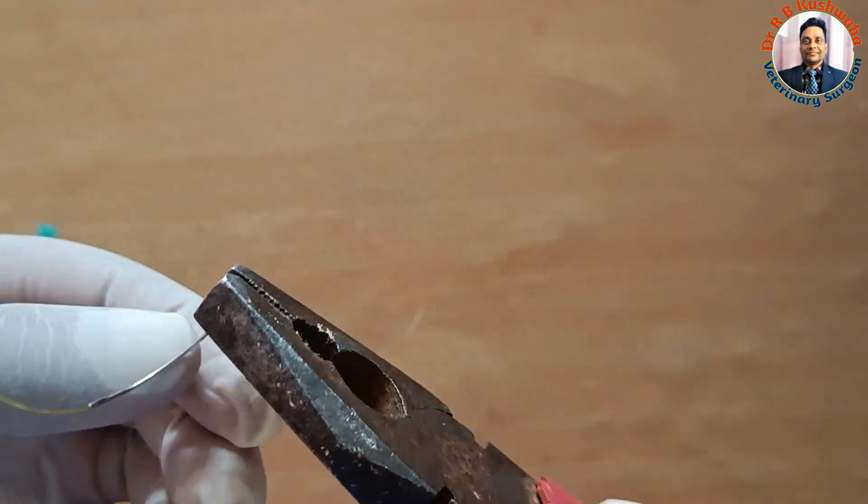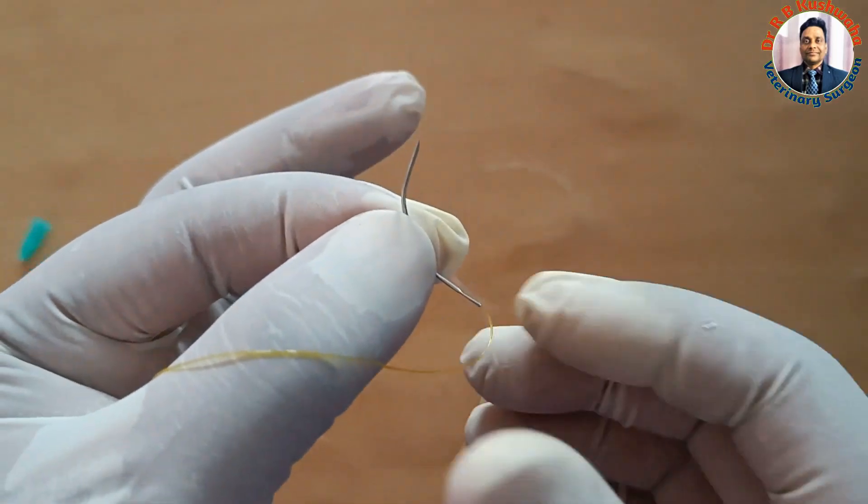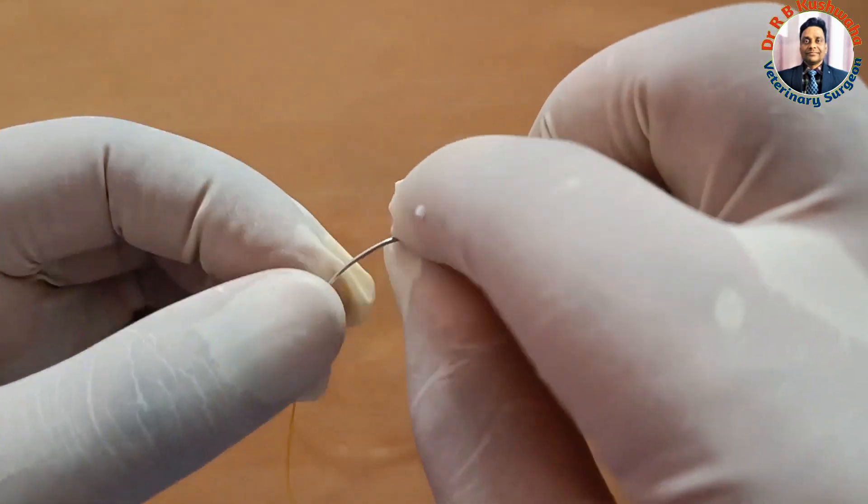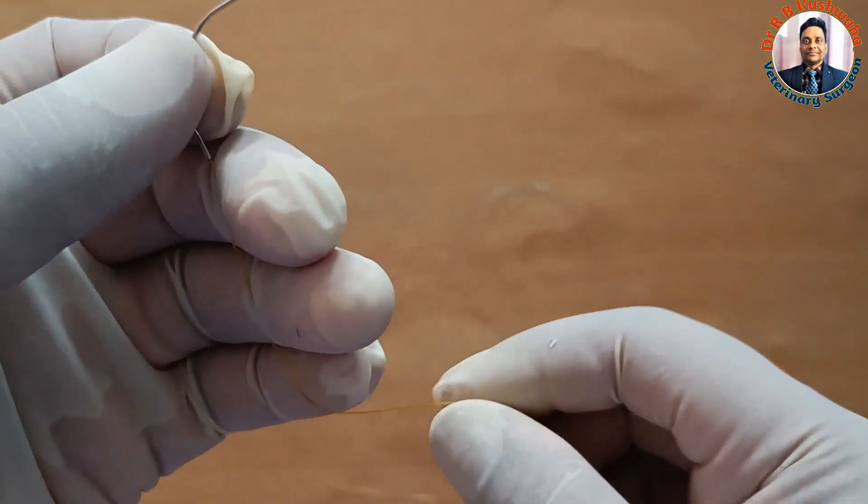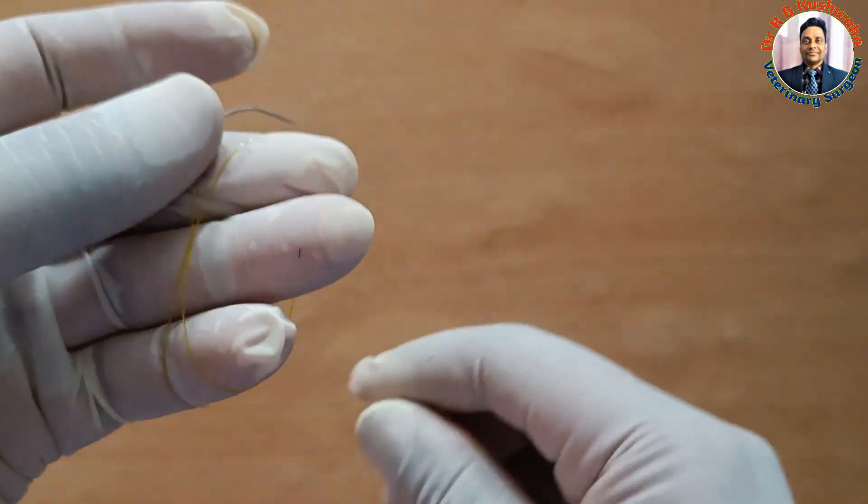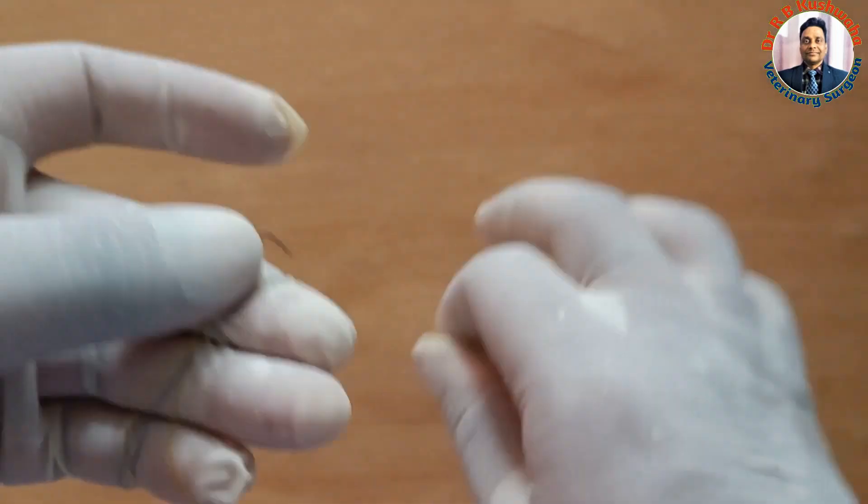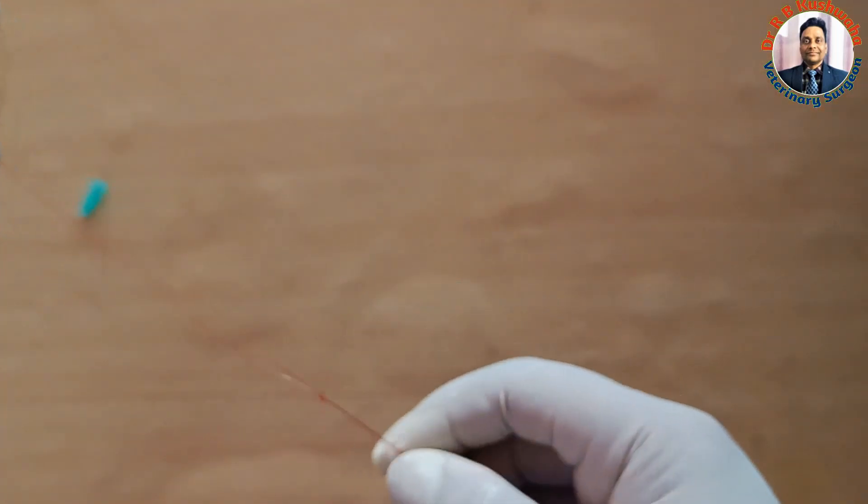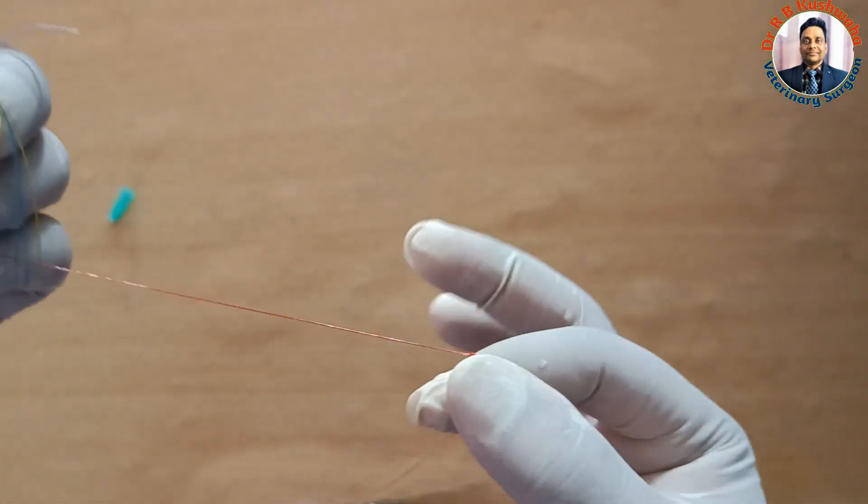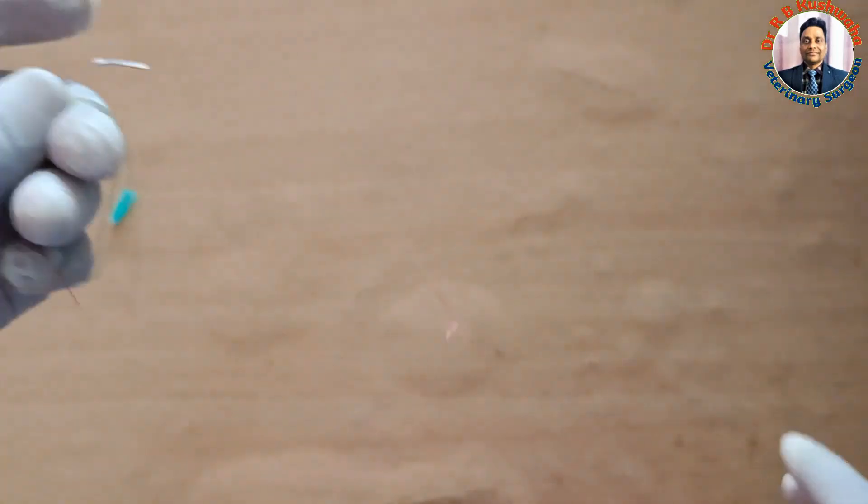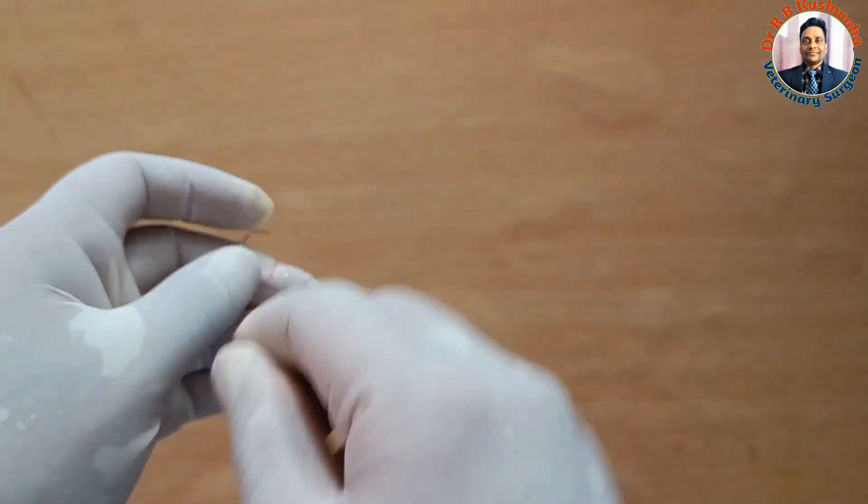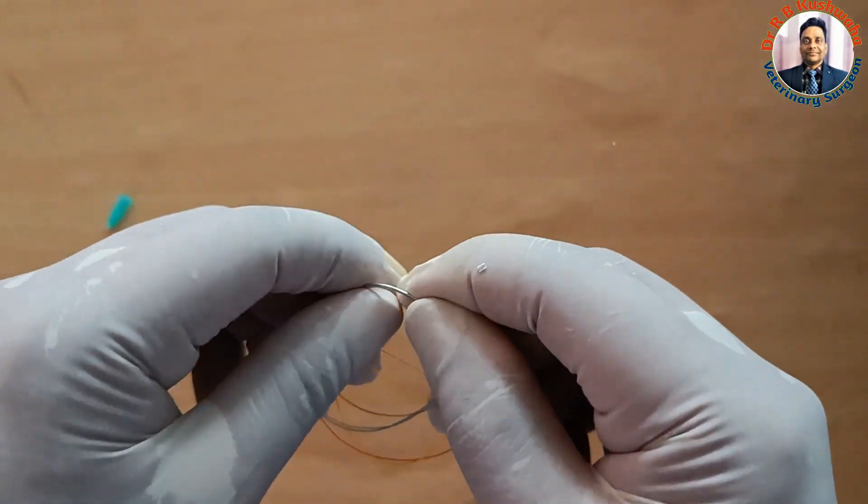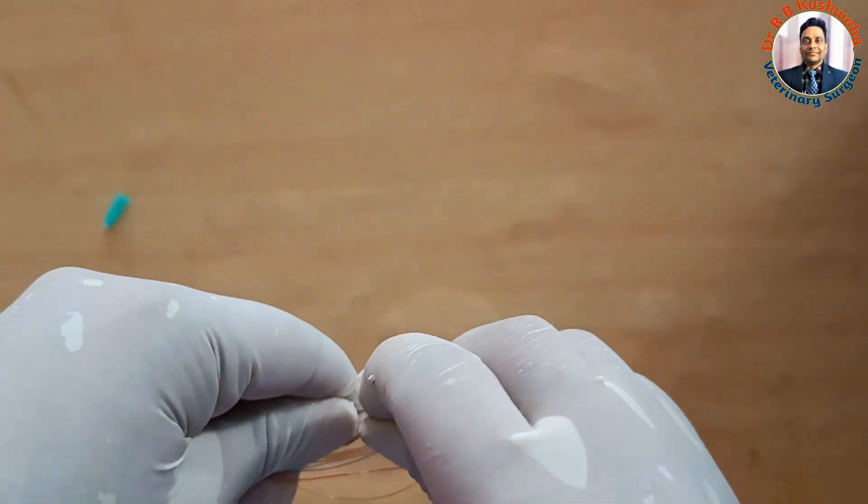Now you could see this is a curved one. Curvature you can make as per your convenience, as per your requirements. Then after making this, again you just make a loop, and then one or two - one is sufficient.